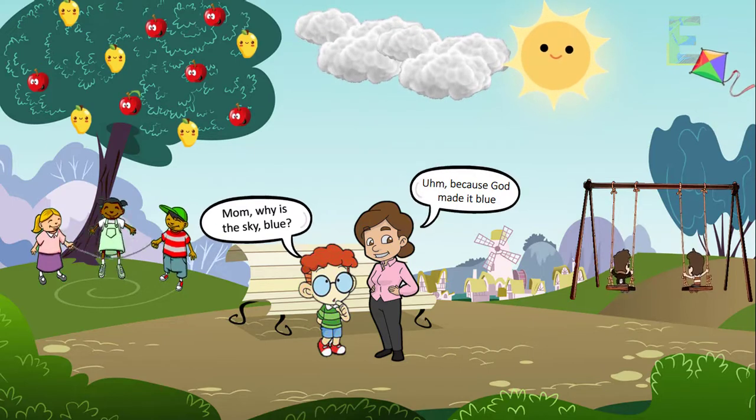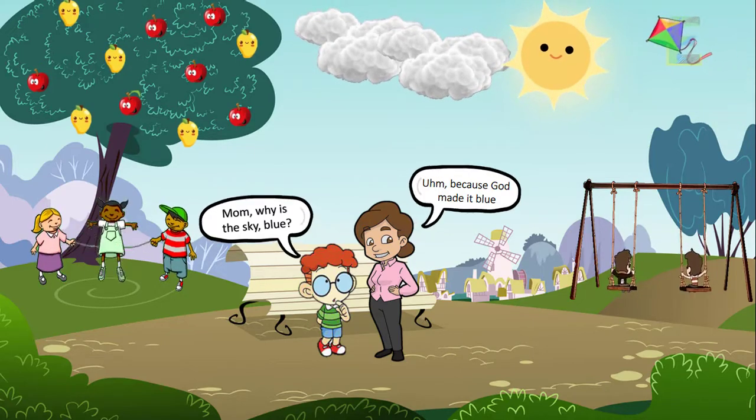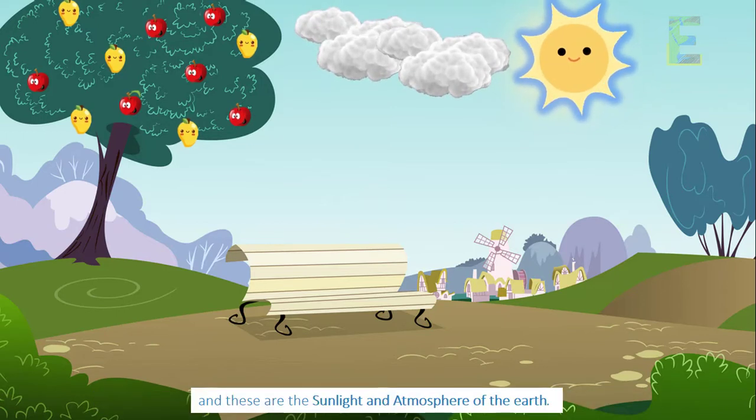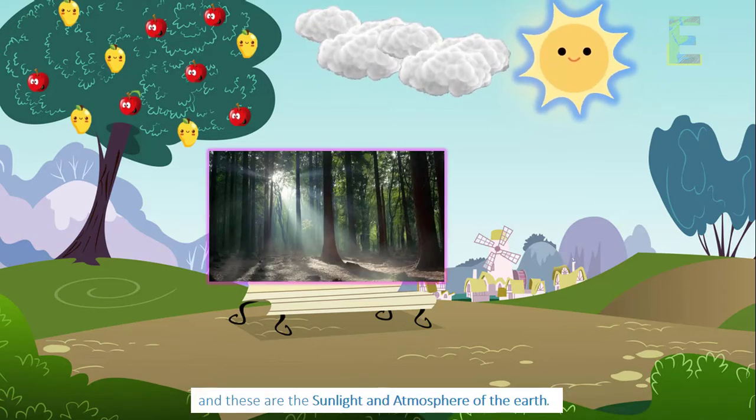Before we understand why the sky is blue, we first need to know the two things that play an important role in giving color to the sky. And these are the sunlight and atmosphere of the Earth.